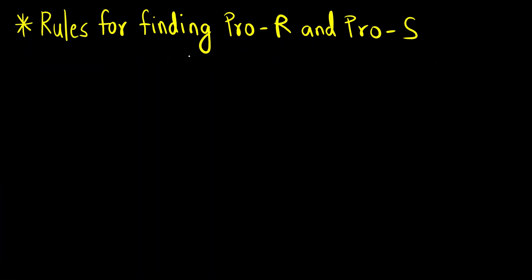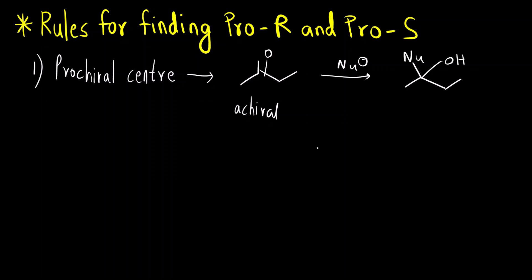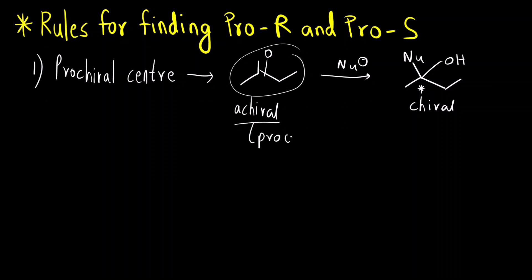Let us first understand the rules for finding pro-R and pro-S. I have already made a video on this — I'll provide the link in the description. For a quick recap: a pro-chiral center can be a compound like a ketone, which is normally achiral. For example, butanone — after adding a nucleophile it becomes chiral, because that carbon is now attached to four different groups. The reactant was achiral, so such molecules are called pro-chiral ('pro' meaning 'before' chirality).